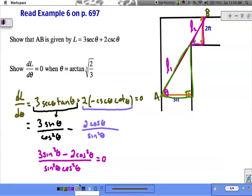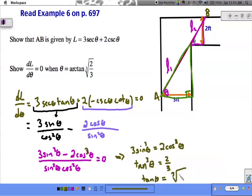If this is going to equal 0, then 3 sine cubed must equal 2 cosine cubed. Rearranging this, dividing both sides by cosine cubed, dividing both sides by 3, we get tangent cubed theta is 2 thirds. So the tangent of theta is the cube root of 2 thirds. And we've just arrived at this, which is approximately 41.4 degrees.